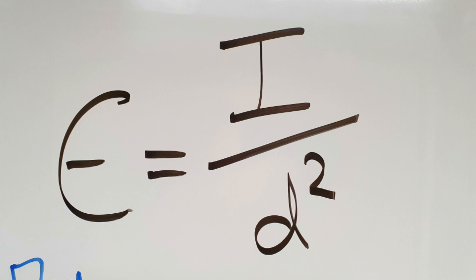E is the illuminance, how brightly lit a surface is. I is the luminous intensity, how powerful a light source is, how intense a light source is. D is the distance from the light source to the surface.